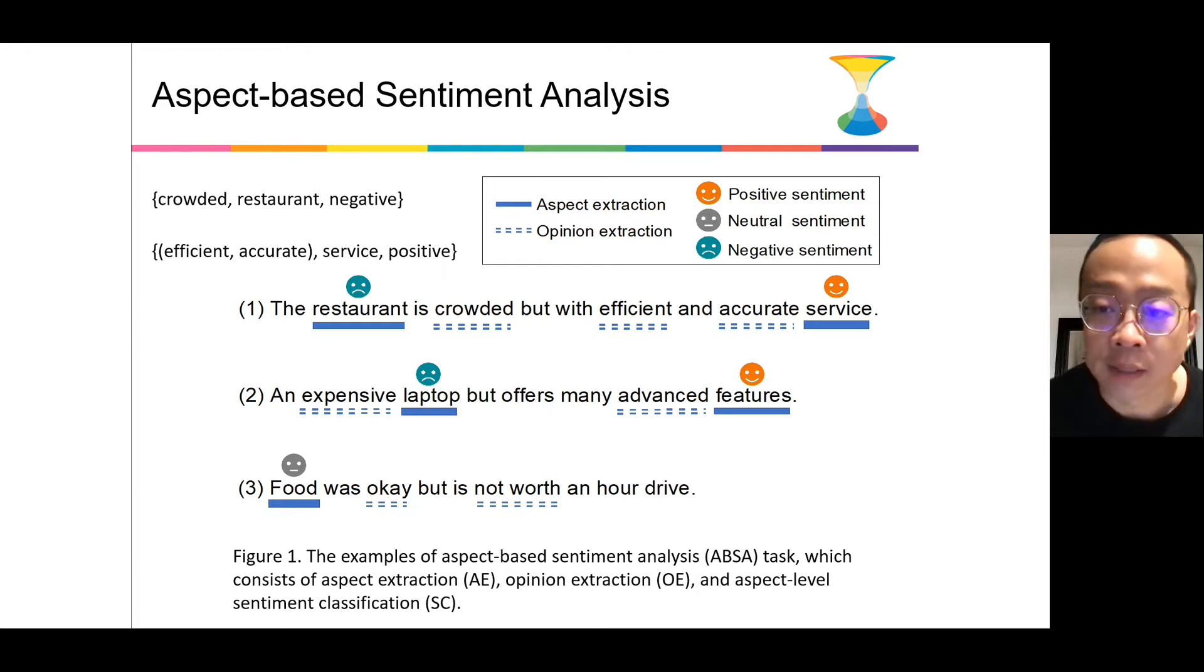For example, given a sentence, the restaurant is crowded but with effective and accurate servers. We aim to extract triplets. The first one is a crowded restaurant with negative emotion. And the second triplet is efficient accurate servers with positive sentiment.